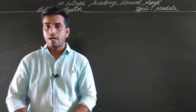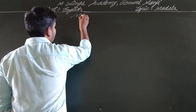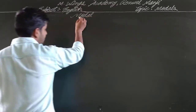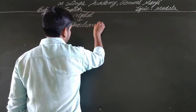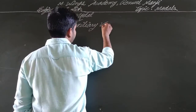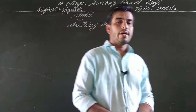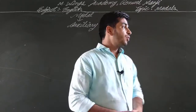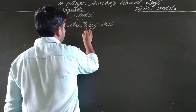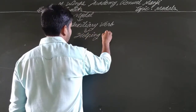First of all we have to know what a modal is. A modal is an auxiliary verb. An auxiliary verb is a verb that is used to help the main verb to complete the sense of the sentence. So we can say the auxiliary verb is your helping verb.